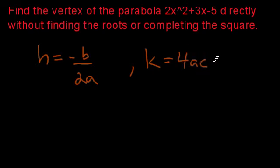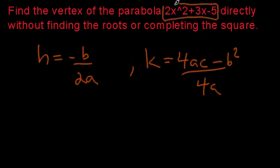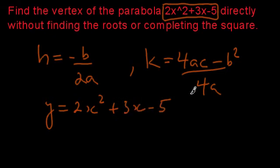k = (4ac - b²)/(4a). Now we're going to solve this problem. We've been given a parabola with this equation in standard form: 2x² + 3x - 5. I'll rewrite the equation here: y = 2x² + 3x - 5.